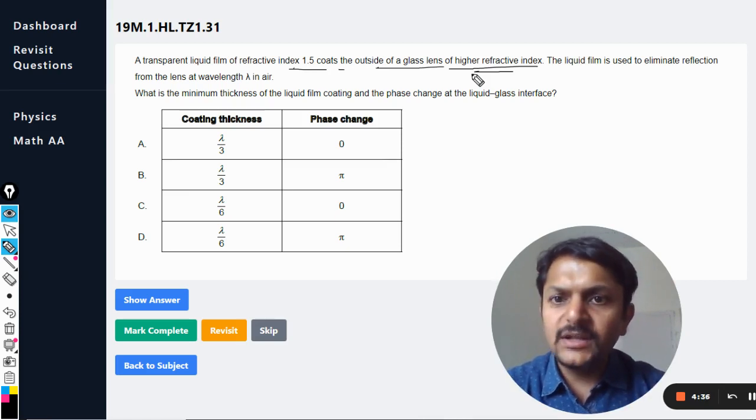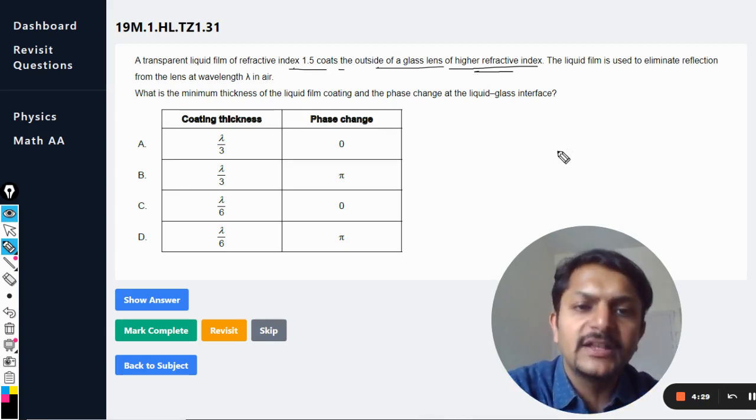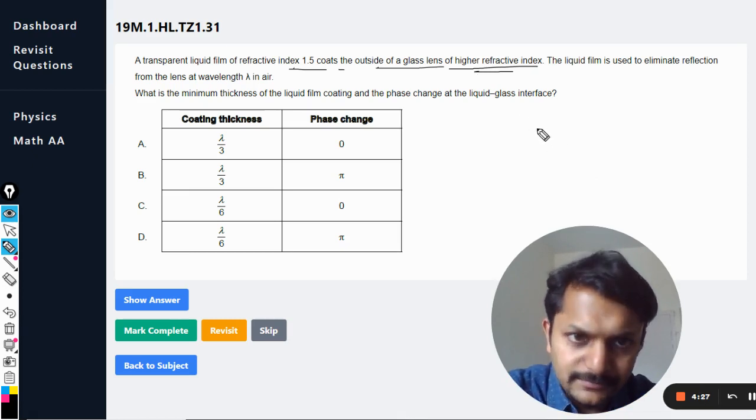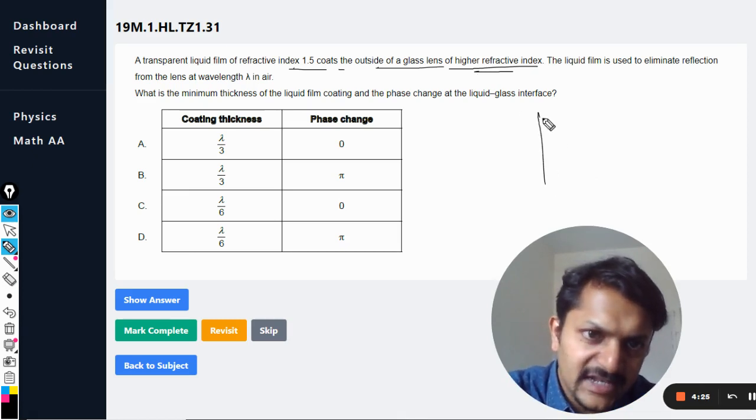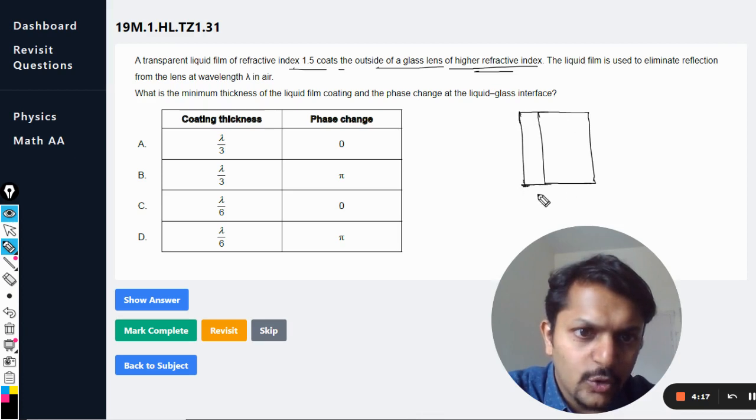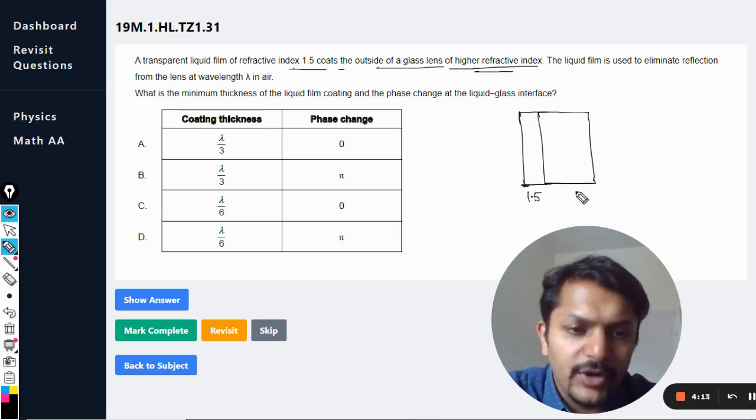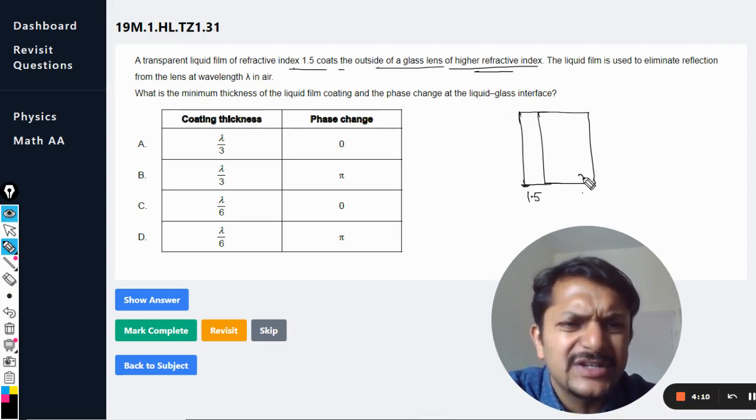What is the minimum thickness of the liquid film and the phase change at the liquid-glass interface? So first of all, let us say this is the glass and this is the film that is coated. The refractive index for film is 1.5 and the glass is more than 1.5, so you can just take it as n which is more than 1.5.